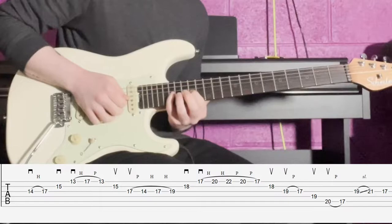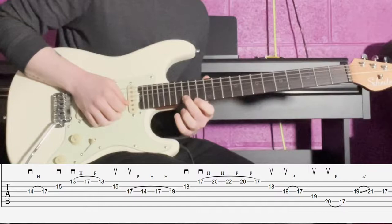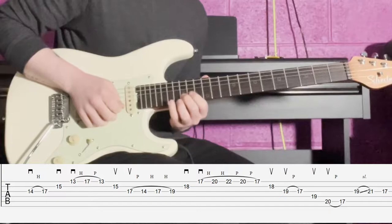Then we're hammering on to the minor seventh in the D minor seven arpeggio. Then we're going to hit the 15th fret, which is a root note on the B string, with a down pick. So you have down, hammer, down.